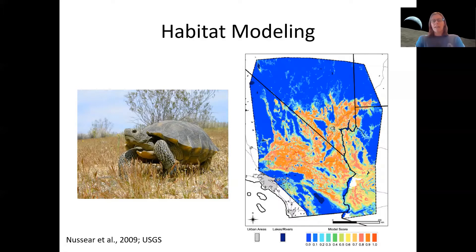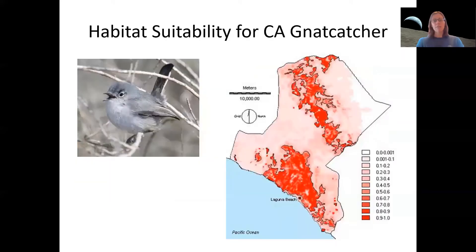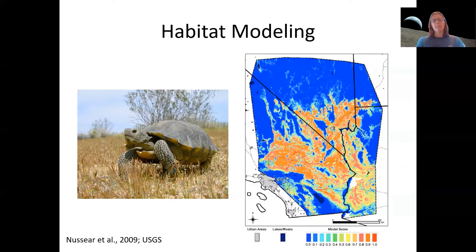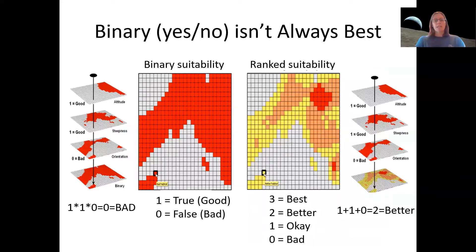In lab six, a lot of what you did in raster analysis was creating binary yes-no answers — true or false, one is true, zero is false — giving an answer where it's like: here are all the areas that are suitable and everything else is not. But in both the gnatcatcher map and the tortoise map, there's a gradation of high suitability to low suitability. A simple yes-no answer might not be what people ultimately want — they might want best, better, okay, and bad.